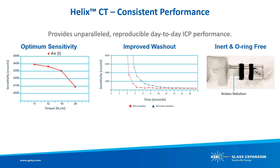In addition to optimum sensitivity, the analytical benefits of the Helix CT interface include superior washout — it is the only zero dead volume spray chamber interface available, providing superior washout especially for elements prone to carry over. The Helix CT is also a chemically inert seal immune to strong acids and organic solvents, eliminating all the drawbacks of an o-ring seal and improving user safety. These design innovations have provided the TRACE cyclonic spray chamber with sensitivity gains, reduced washout times, and reduced matrix effects not possible with other spray chambers.